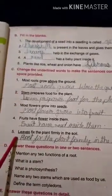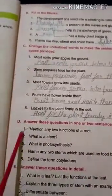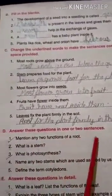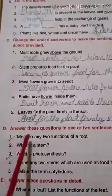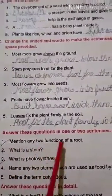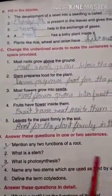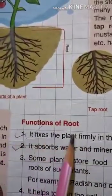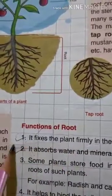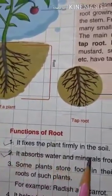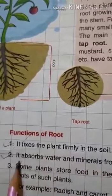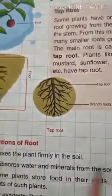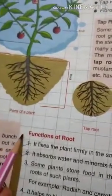Answer these questions in one or two sentences. Number one: mention any two functions of a root. Number one — it fixes the plant firmly in the soil. Number two — it absorbs water and minerals from the soil.